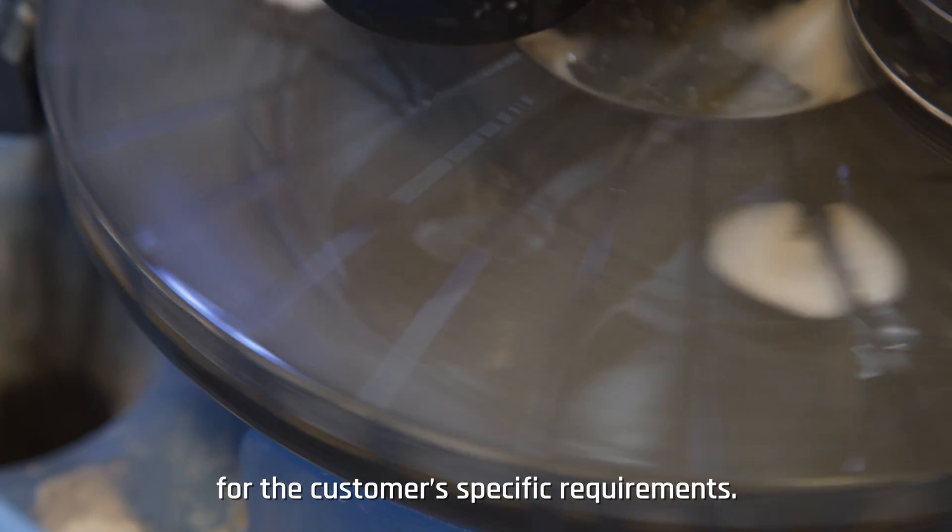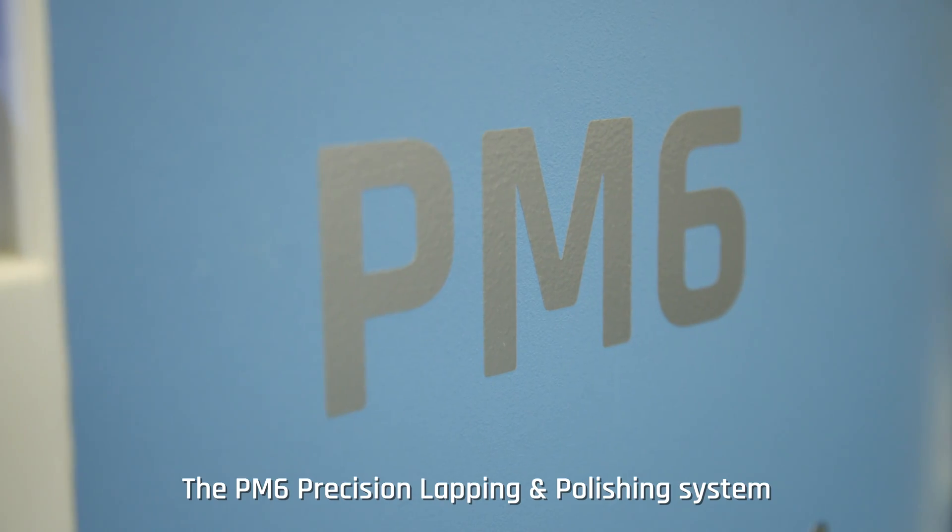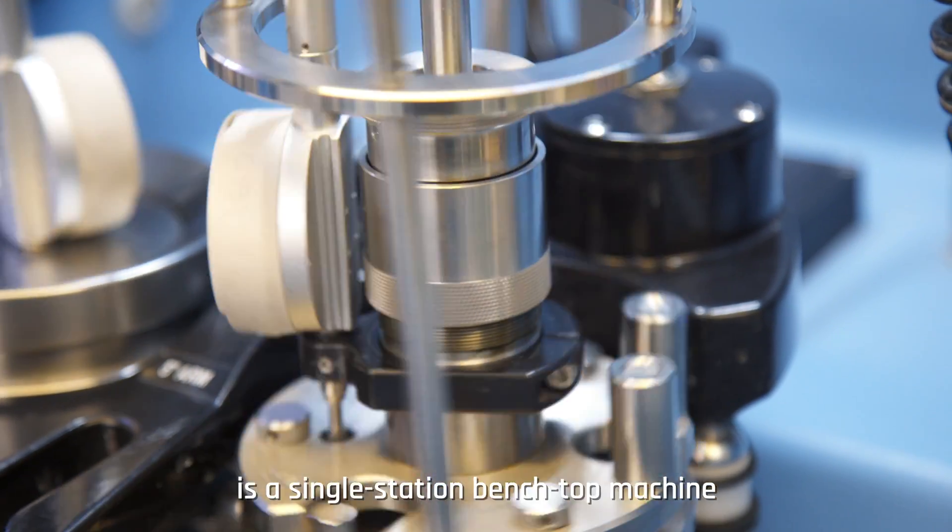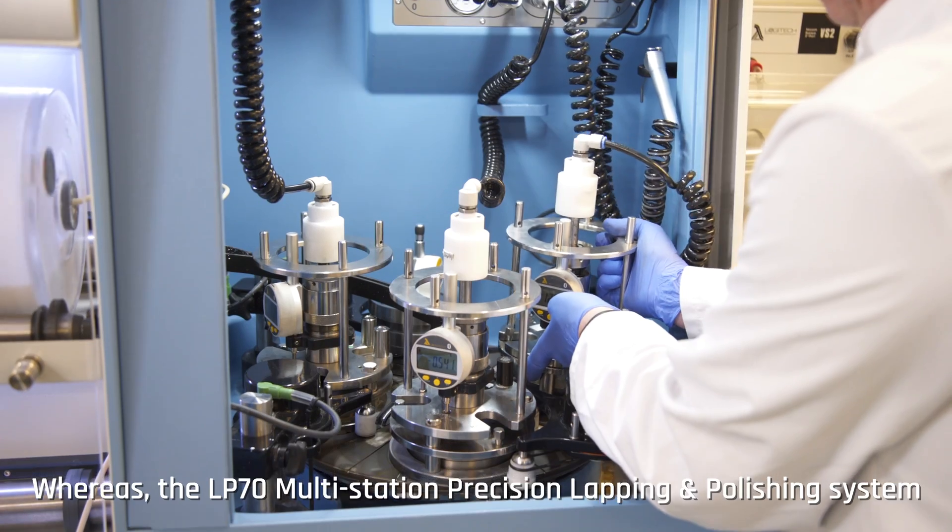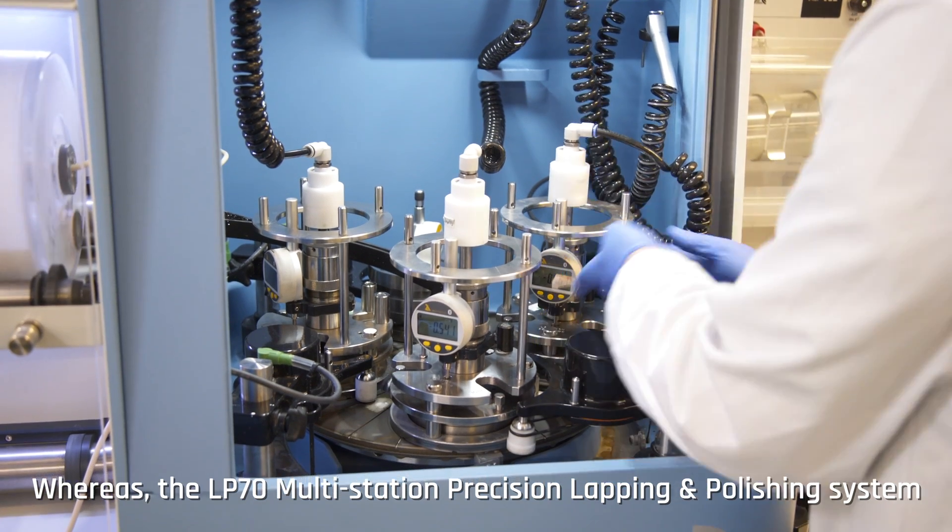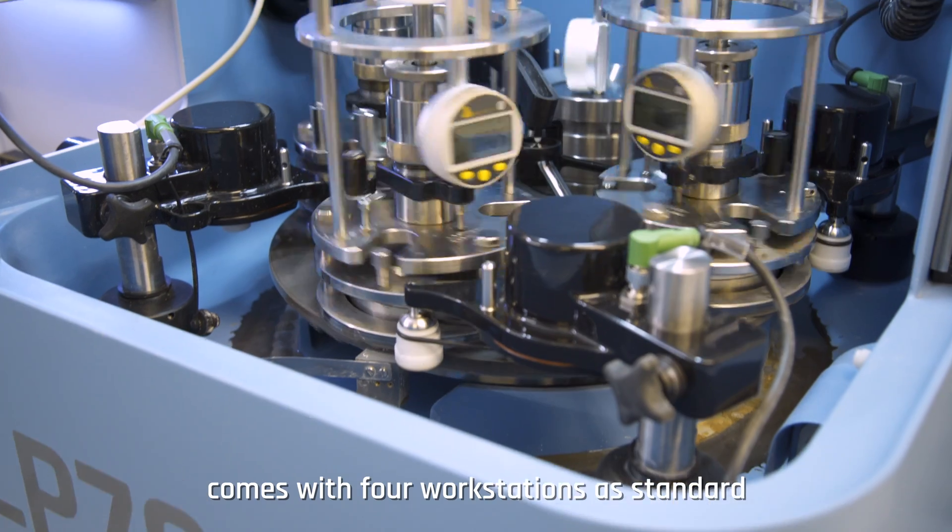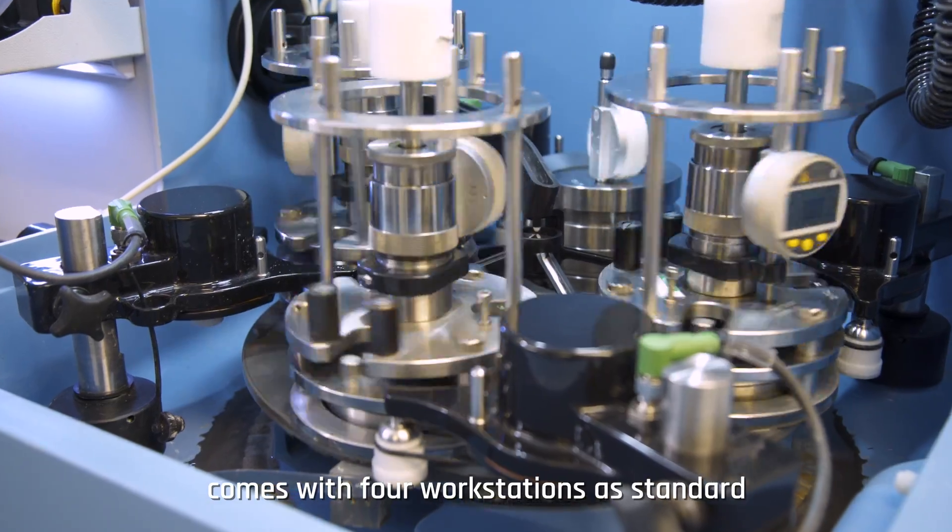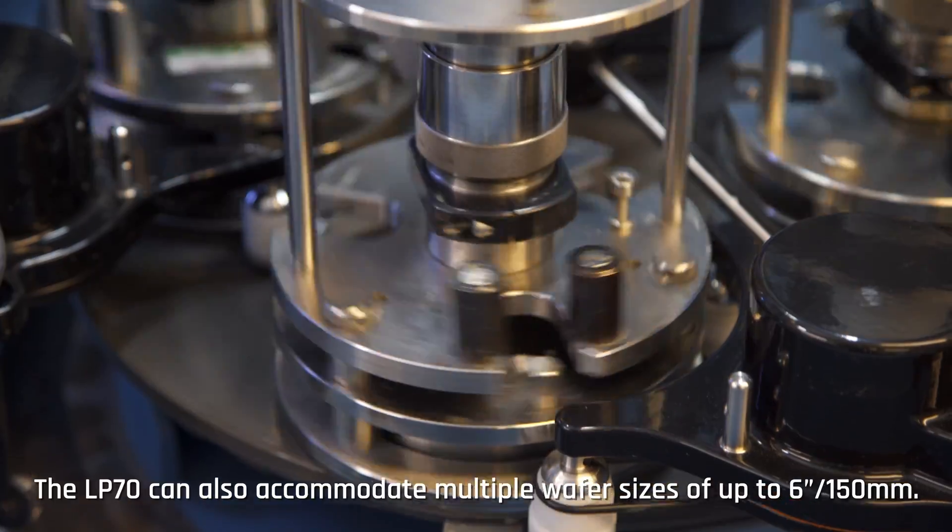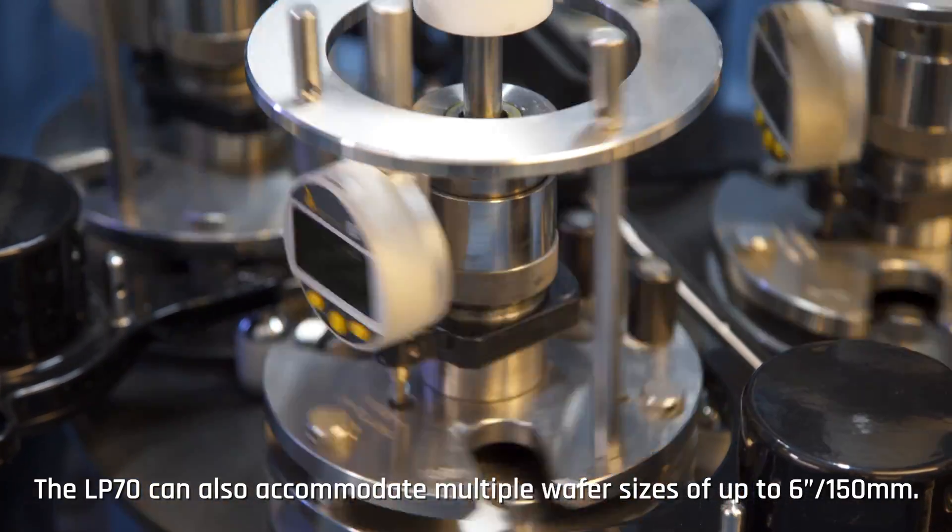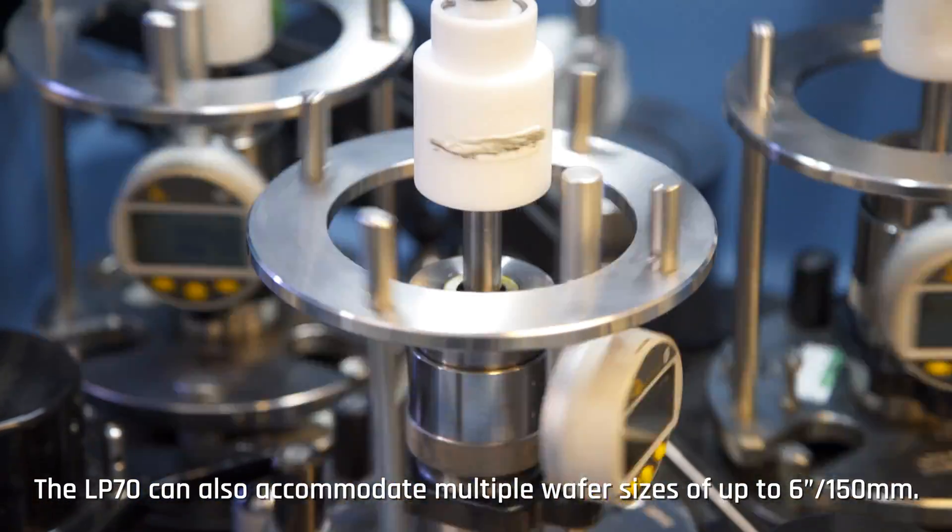The PM6 precision lapping and polishing system is a single station benchtop machine with a wafer process capacity of up to 100 millimeters, whereas the LP70 multi-station precision lapping and polishing system comes with four workstations as standard, allowing for the process of multiple samples simultaneously. The LP70 can also accommodate multiple wafer sizes of up to 150 millimeters.